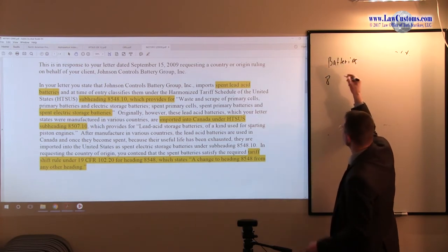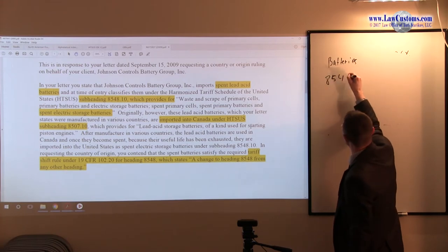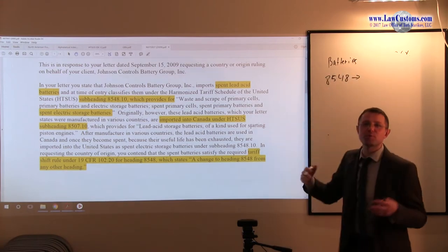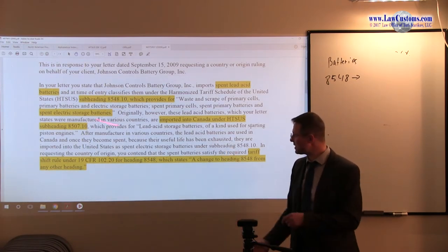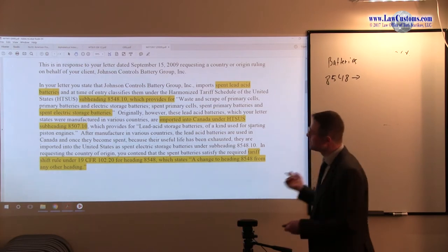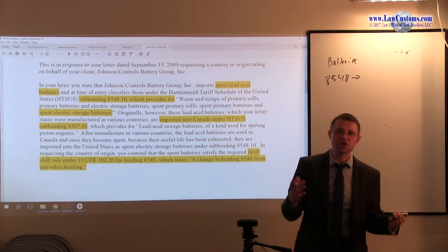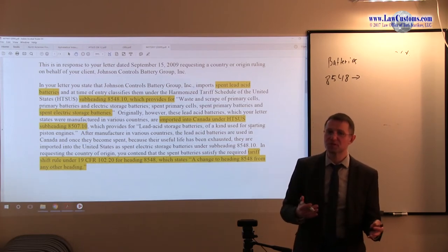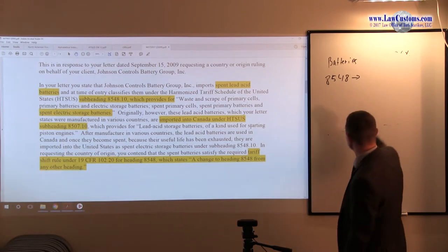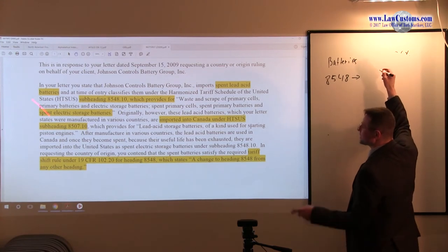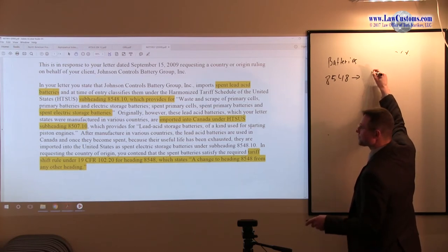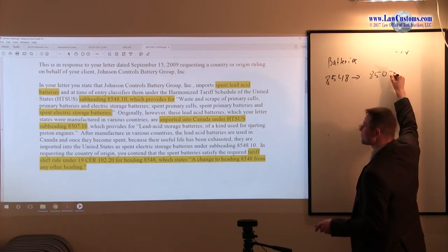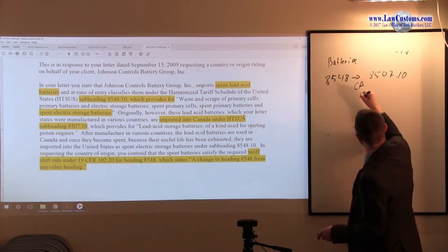In Canada, they were classified as 8548. But then they were used up. So what do you do with them once they are used up? Well, whatever these guys do with them, probably recycle them. The classification for the used batteries is different than the classification for the non-used batteries. So once the battery becomes spent, it changes to tariff classification to 8507. And all this change takes place in Canada.